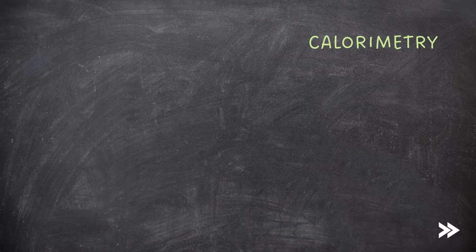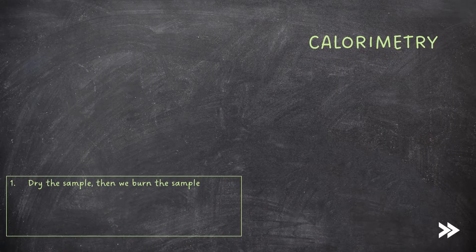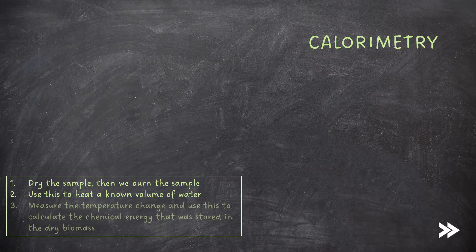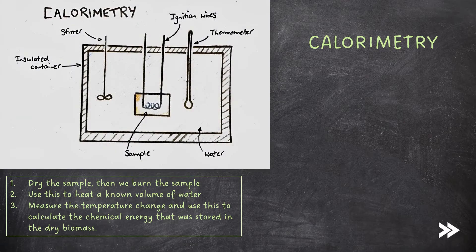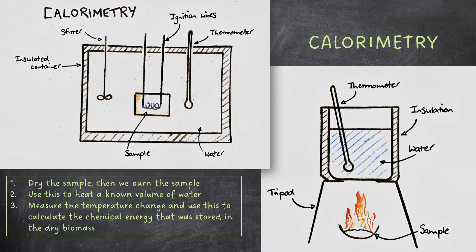We can measure biomass via a process known as calorimetry. First, we dry the sample, then we burn the sample and use this to heat a known volume of water. We measure the temperature change and use this to calculate the chemical energy that was stored in the dry biomass. Calorimetry experiments can be done using very simple apparatus all the way to very complex apparatus — for example, a bomb calorimeter if you do A-level chemistry. The overall principle is the same: we burn a sample of dry biomass to heat a known volume of water. We use insulation around the water to prevent heat dissipating to the surroundings, a thermometer to measure the temperature change, and a stirrer to ensure heat is evenly distributed.